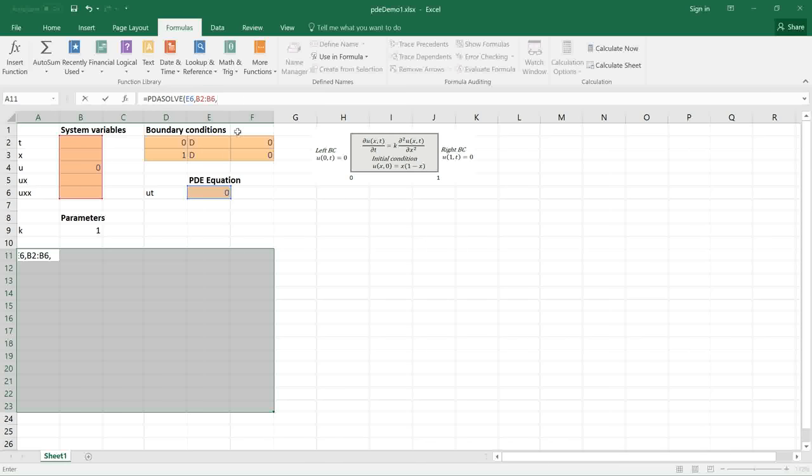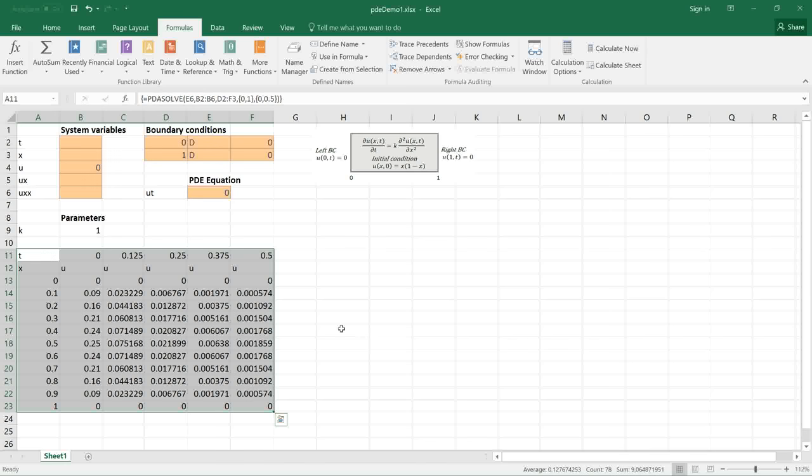My second argument is the system variables. My third argument is the boundary condition range. My fourth argument is the spatial domain range 0 to 1 and my fifth argument is the time interval from 0 to 0.5. Pressing CTRL SHIFT ENTER runs it and I get the solution.